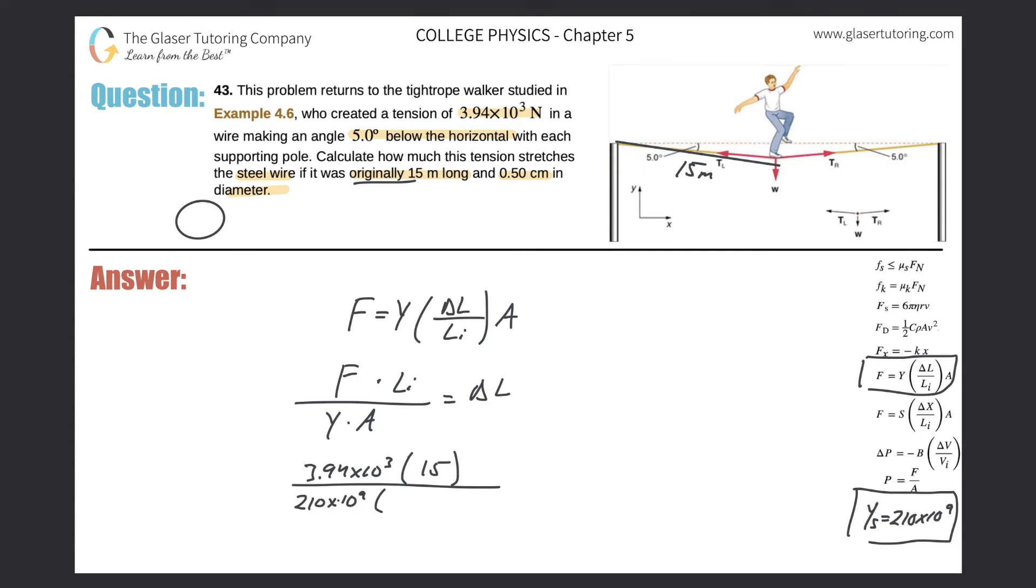They told us it has a diameter of 0.5 centimeters. What's half of 0.5? 0.25. So we get 0.25 centimeters - I need to convert that to meters, move the decimal two places to the left, so it's 0.0025 meters. Now I can use this in my area formula. Area equals pi r squared, so area equals pi times 0.0025 squared, and we get 1.96 times 10 to the minus 5 meters squared.